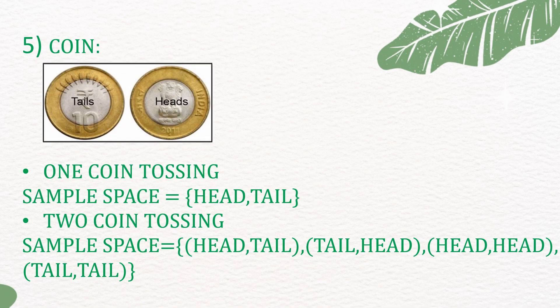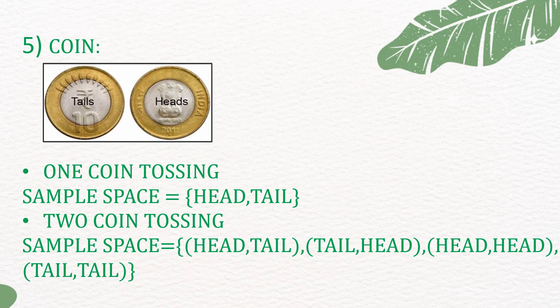5. Coin. A coin has two sides. One coin tossing, the sample space is {head, tail}.